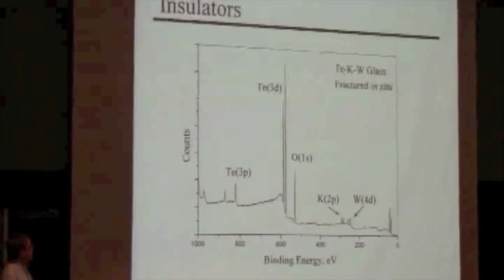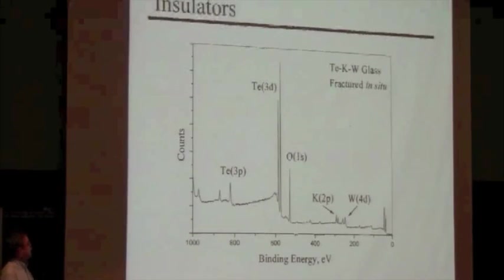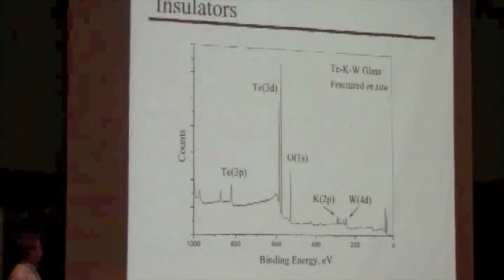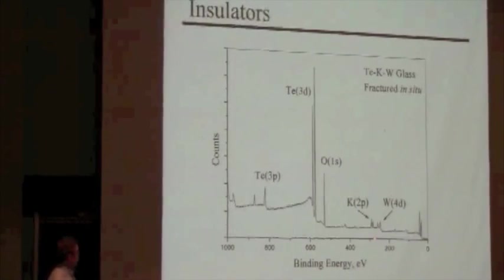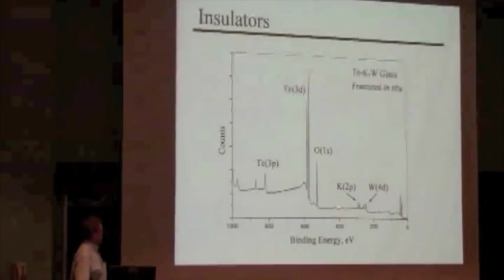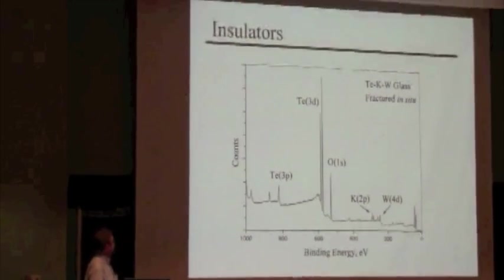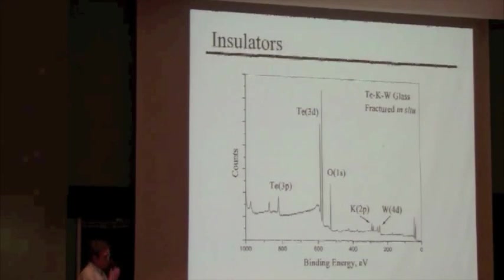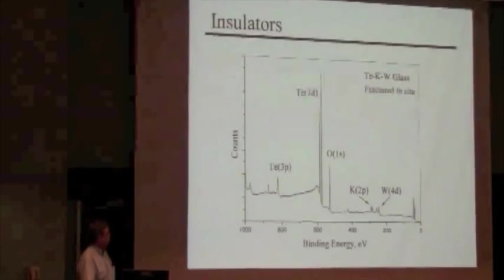As Andre is going to talk about shortly, we've looked at a lot of glass surfaces. This is a tellurium potassium tungsten glass and it was fractured in situ. And by being fractured in situ means that we have virtually no hydrocarbon contamination and you get the full range of peaks without having been exposed to air. Other studies along this general line with glasses that have been exposed to air and fractures have shown that the changes that can take place in the surface and near surface composition of glasses can happen extremely rapidly within the matter of a few minutes.